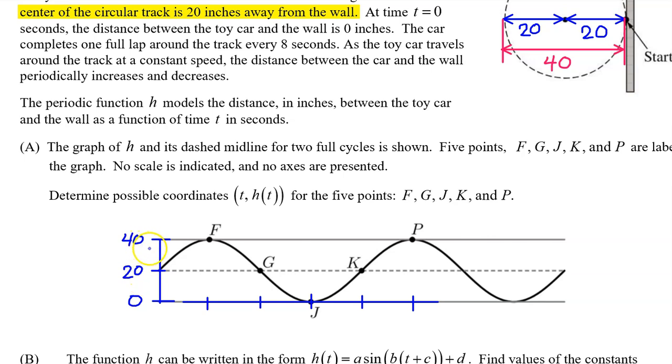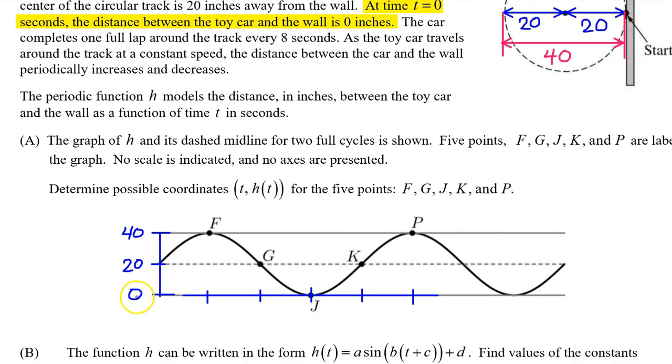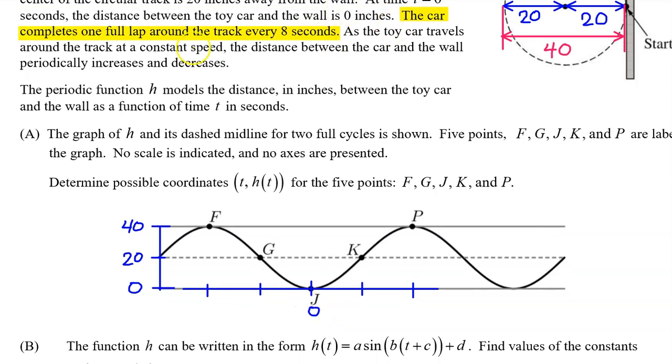We now have the output value of all five points. Now let's see if we can find the input value for each of these five points. At time t equals zero seconds, the distance between the toy car and the wall is zero inches. Zero inches is the lowest distance that the car can possibly be. So we need to pick a low value like j and call it t equals zero. The car completes one full lap around the track every eight seconds. In other words, the period is eight seconds.